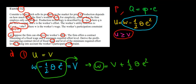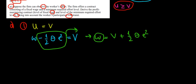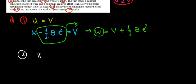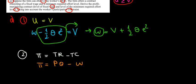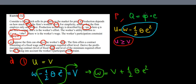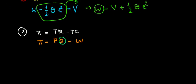Now with this wage in mind, we think about what is optimal for the company. The firm's profit is total revenue minus total cost. Total revenue is price P times quantity Q, and total cost is the wage W. We know that quantity Q equals theta times effort E, so we substitute that into the profit function.